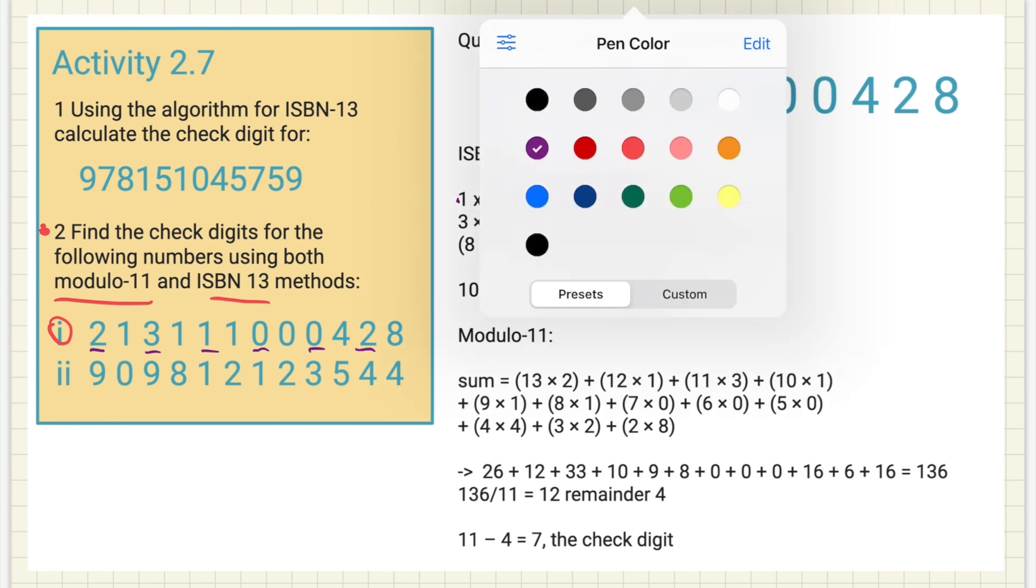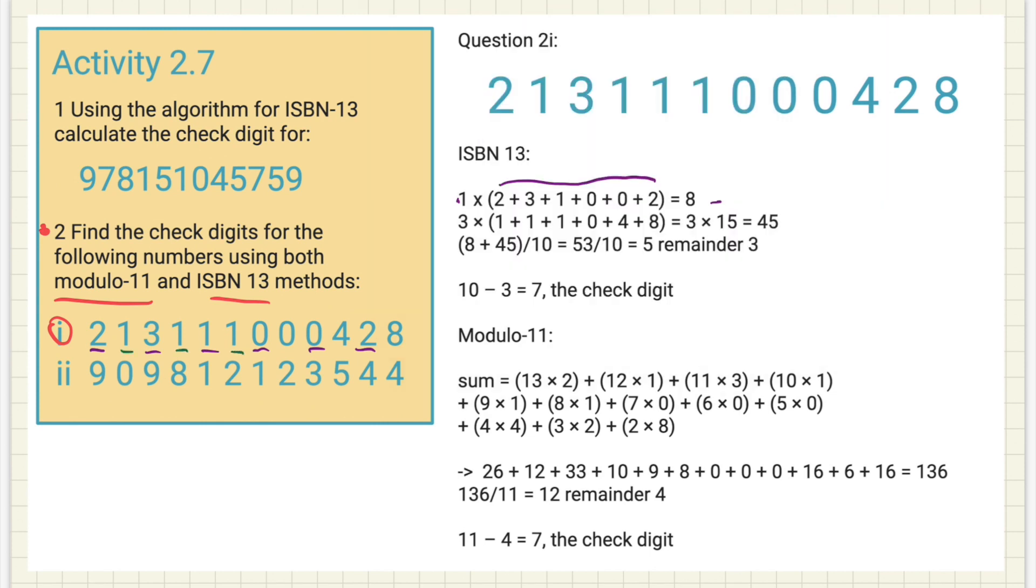Then I do the even numbers: 1, 1, 1, 0, 4, and 8. Add all those down here, times them by 3. So 3 times 15, I get 45. So 8 plus 45 is obviously 53, divided by 10 is 5 remainder 3. So I take the 3 away from 10, and I have a check digit of 7.